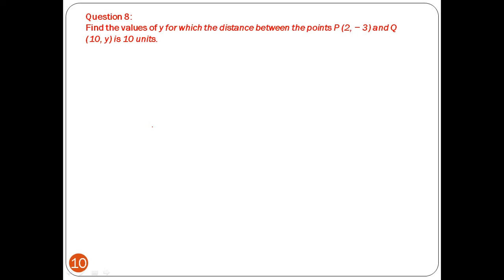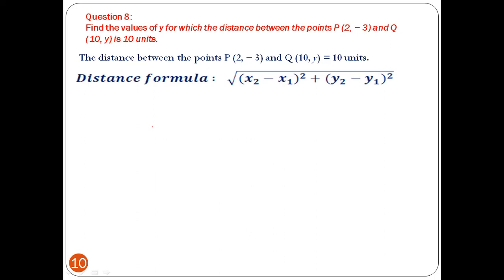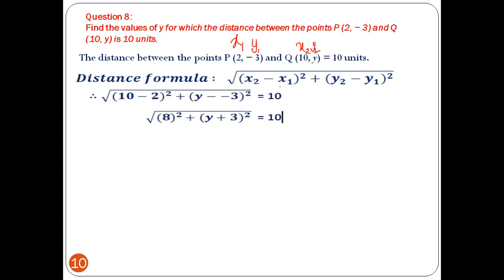Those who understood the question can try it. The distance between P and Q is given as 10 units. Using the distance formula: √[(10 - 2)² + (y - (-3))²] = 10, which simplifies to √[8² + (y + 3)²] = 10.